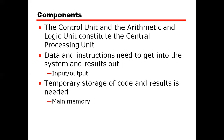The control unit and arithmetic and logic unit constitute the central processing unit. The CPU has two parts: one is the CU and the other is the ALU. Data and instructions need to get into the system — that is your input — and results come out as output. Temporary storage of code and results is also needed.